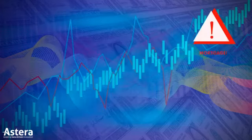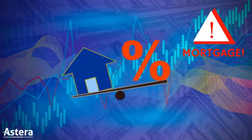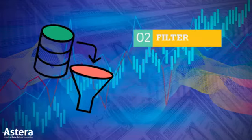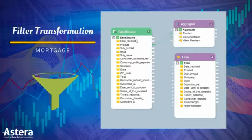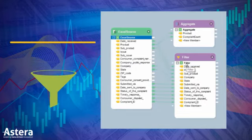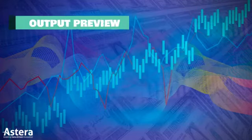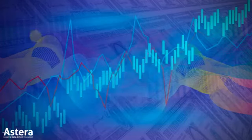Since we now know the product with the highest number of complaints, the next step is to filter out data for mortgage. A filter transformation will be applied on the source data to filter out records on mortgage. The output will show all records of mortgage filtered from the data.